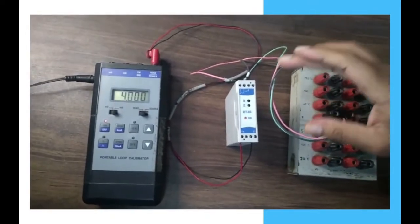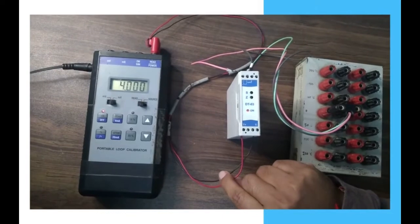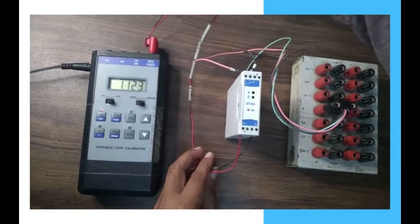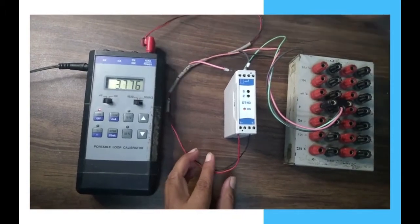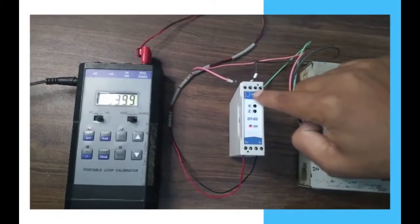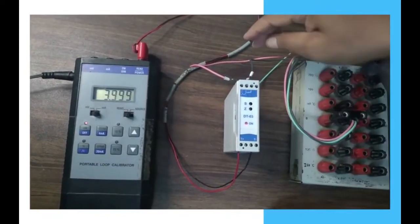Here we have applied a power supply of 24 VDC. This is a loop power device, so from these two wires we will get 4 to 20 milliampere current according to temperature variations. Here, from the RTD resistance source, we have applied the RTD 3-wire input.